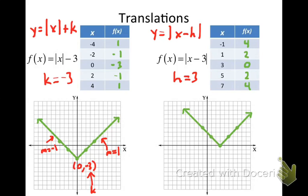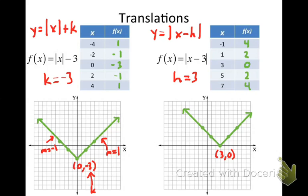So we've ended up shifting the graph 3 units to the right. The vertex is not at the origin — it's at the point 3, 0. Subtracting 3 from the input value moves the graph 3 units to the right. And that subtraction didn't change the slopes — the slope of the right side is positive 1, and the slope of the left side is negative 1.